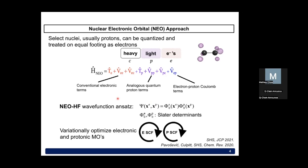NEO-Hartree-Fock is the simplest NEO wave function variant. The wave function ansatz expresses the total wave function as a product of electronic and protonic Slater determinants, each comprised of molecular orbitals that are linear combinations of electronic and protonic Gaussian basis functions. We have an analogous set of protonic basis functions in addition to the standard electronic ones. Just like conventional electronic approaches, the target is to minimize the overall system energy by optimizing the linear combination of coefficients of the Gaussian basis functions.